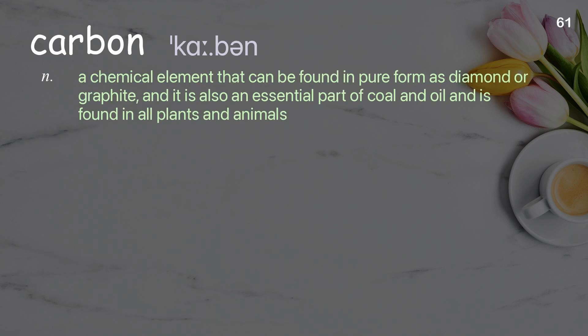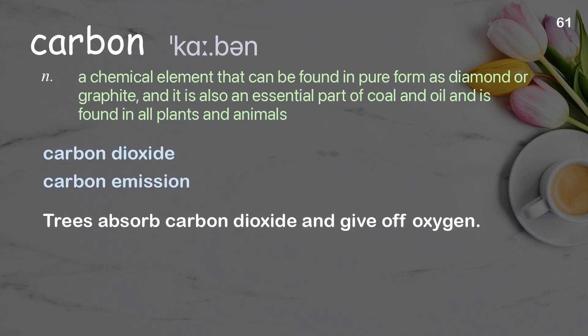Carbon: a chemical element that can be found in pure form as diamond or graphite, and is also an essential part of coal and oil, and is found in all plants and animals. Examples: carbon dioxide. Trees absorb carbon dioxide and give off oxygen.